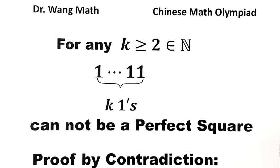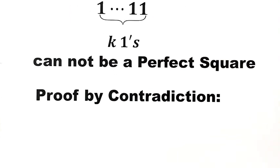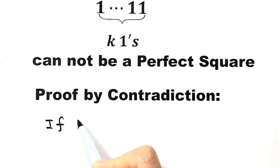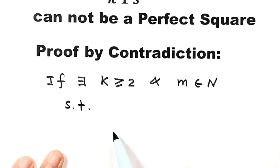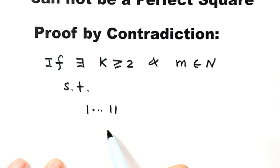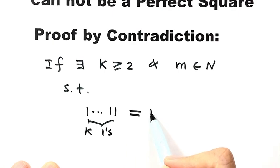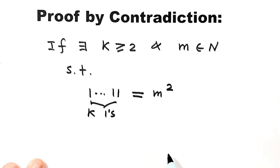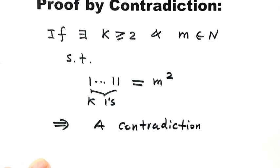So how do we prove it? We use the method of proof by contradiction. The idea is: assume there exists a natural number k which is bigger than or equal to 2, and there exists m which is a natural number, such that the number consisting of k ones is a perfect square — that means it equals m squared. Then we need to find a contradiction.